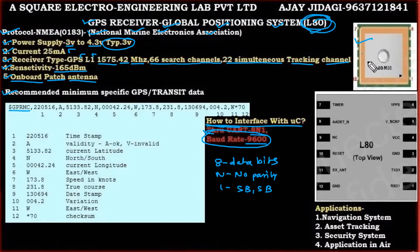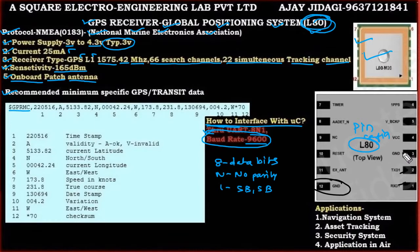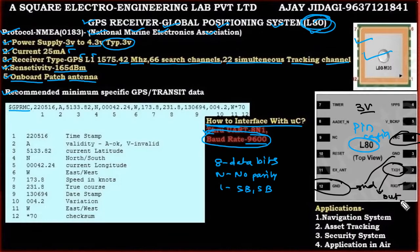The L80 GPS receiver has a specific pin configuration. Counting the pins, there are 12 in total. All ground pins must be connected to ground. The VCC pin should be connected to 3V power supply. From pin number 2, we take the output — this output is connected to the UART RX input of your microcontroller, since the device is compatible with UART communication.